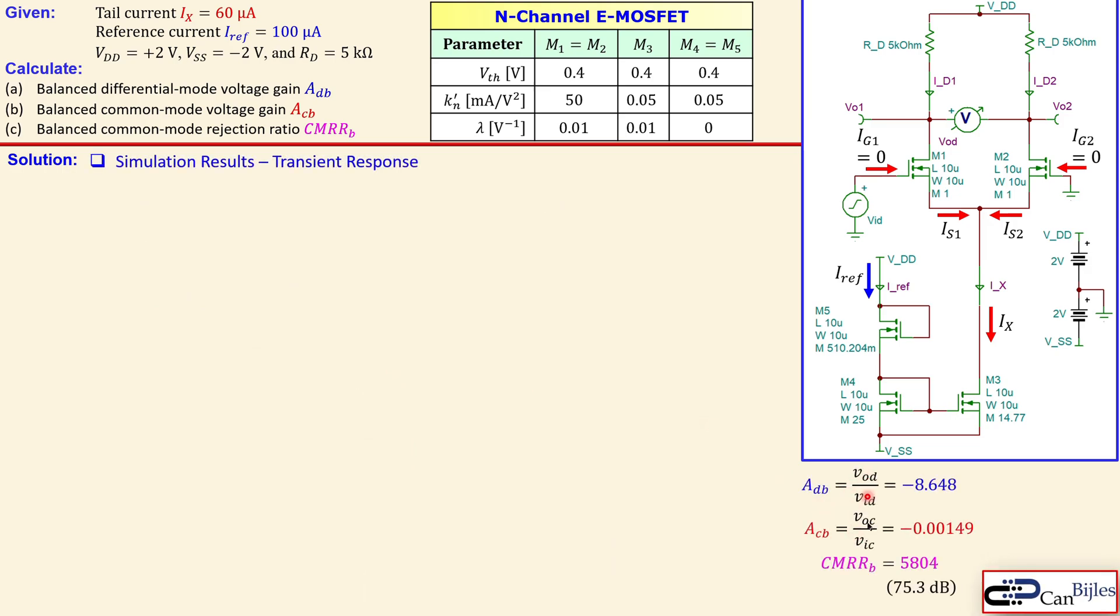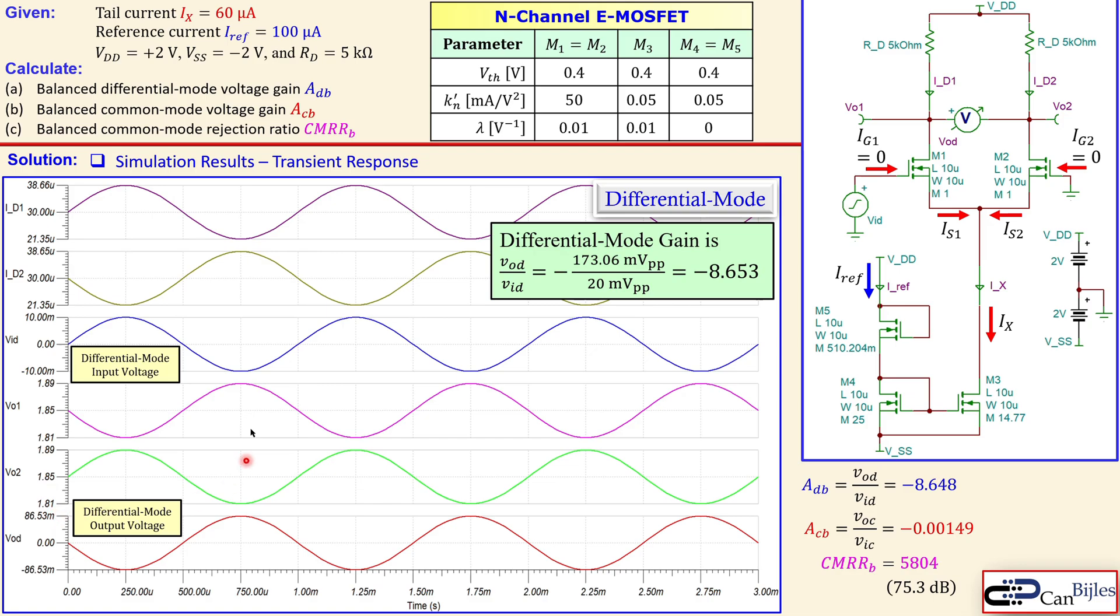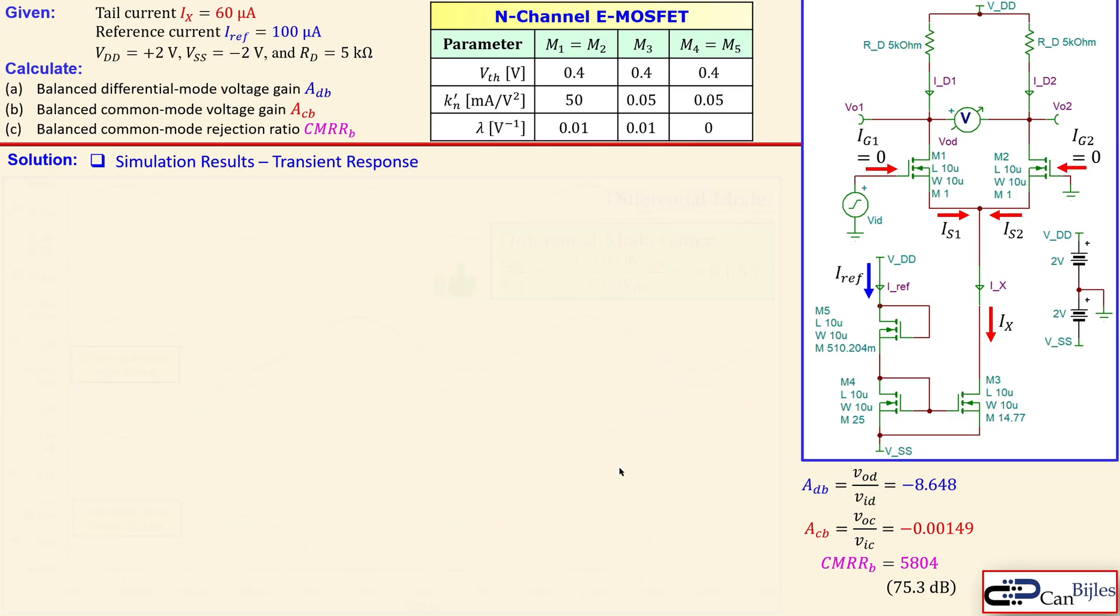Now let's move on to the transient response. These are the values we calculated for differential mode and common mode gain. This is the plot. You see the differential mode input voltage in blue and differential mode output voltage in red. When you do output divided by input, the peak-to-peak value of output divided by peak value of input is shown here: 173.06 millivolts peak-to-peak over 20 millivolts peak-to-peak gives minus 8.653. That's the differential mode voltage gain, which is close to what we had, so this is perfect.